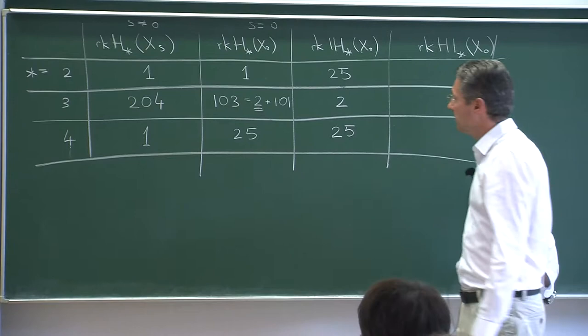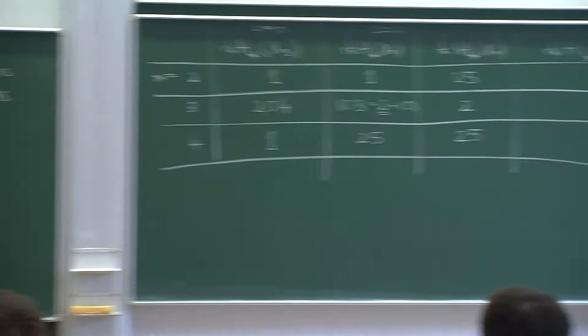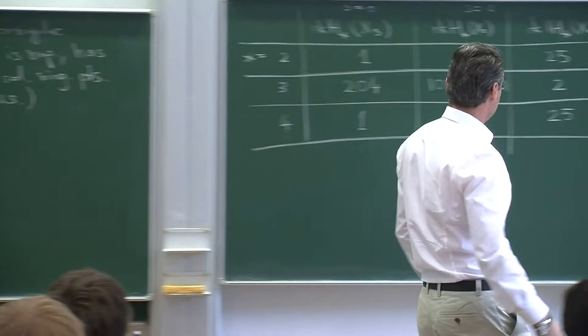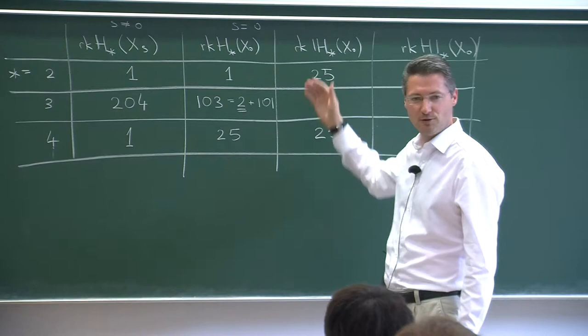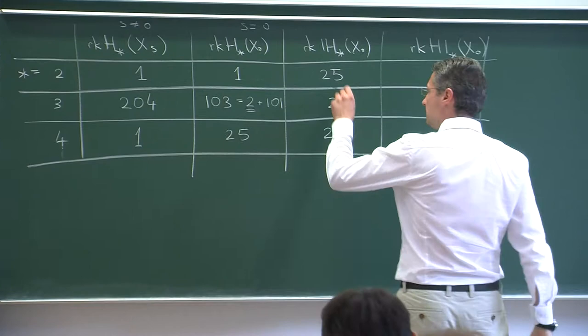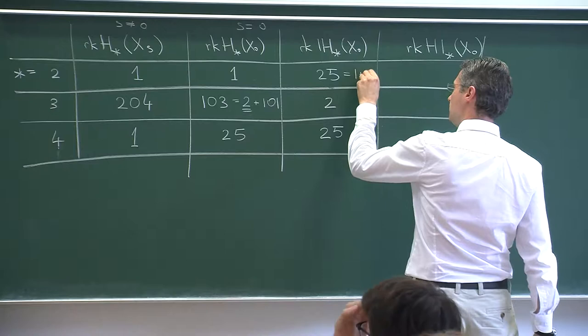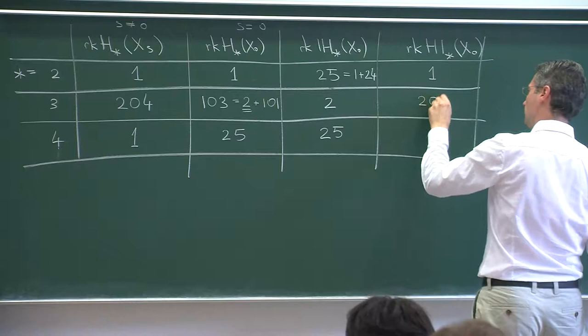Comparing: intersection homology loses a huge number of cycles in the middle dimension relative to the non-singular space. On the other hand, in dimension 2 intersection homology gives 25 as opposed to 1, so cycles are added there. For the HI column, the calculation gives 1, 204, 1 — the same as the non-singular X_S.